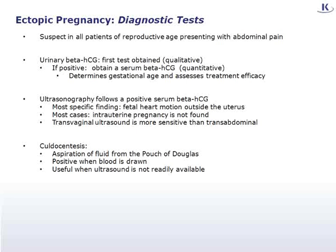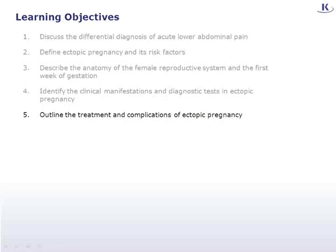Ultrasonography should follow. The most specific ultrasound finding for ectopic pregnancy is fetal heart motion outside the uterus; however, in most cases an intrauterine pregnancy is simply not found. This is why it is important to first obtain a positive beta-HCG. Note that a transvaginal ultrasound is more sensitive than a transabdominal one. A seldom-used procedure is culdocentesis — aspiration of fluid from the pouch of Douglas. A speculum is inserted to visualize the posterior fornix, and a needle is inserted through the pouch entering the peritoneum. If blood is drawn, it is considered positive. A positive culdocentesis is not diagnostic of ectopic pregnancy but can be useful when ultrasound is not readily available.